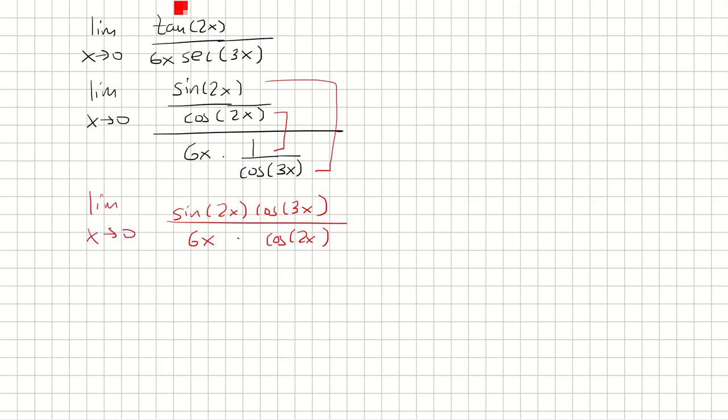At this point we're going to split this up into two separate limits, because now we can easily solve the second limit. If we plug in x equals 0, we're going to get 1. So we're just going to solve the first limit.